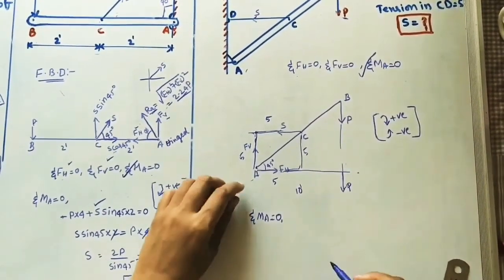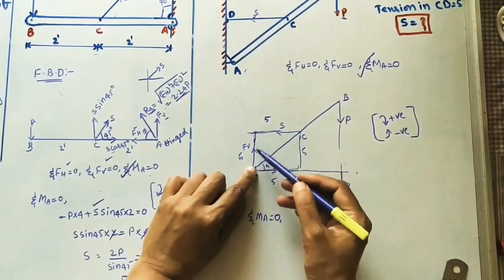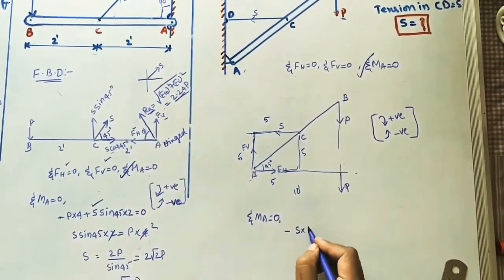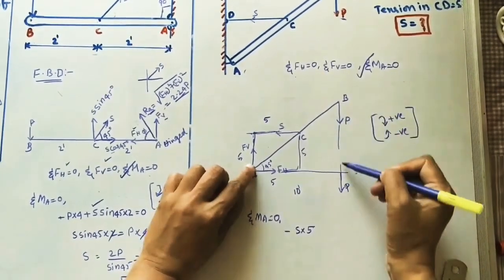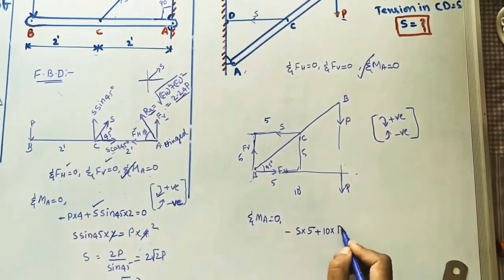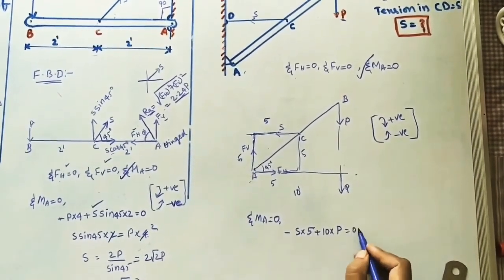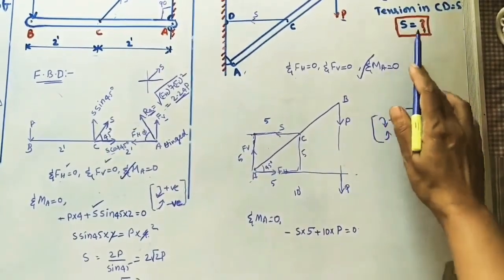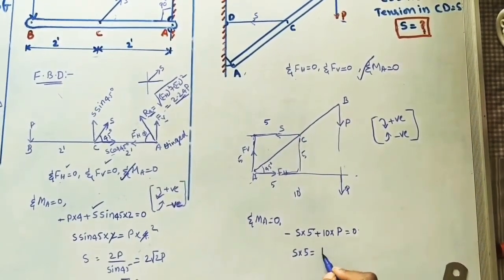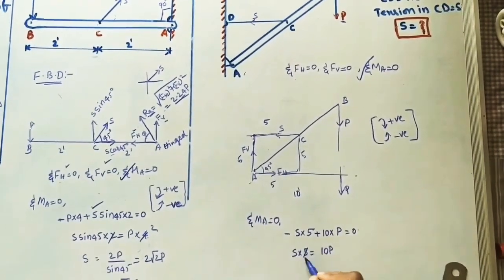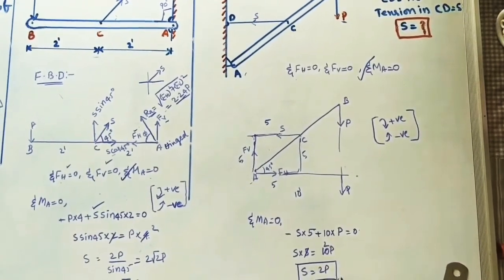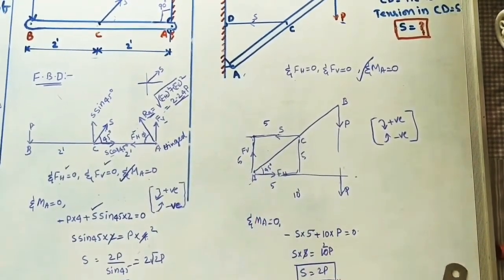Sigma Ma equals zero. The first force is S into 5, which is anticlockwise, so minus S into 5. Next force is P into 10, which is clockwise, so plus 10 into P equals zero. Keep S into 5 on one side: S into 5 equals 10P. So S equals 2P. This is the simple condition for solving.